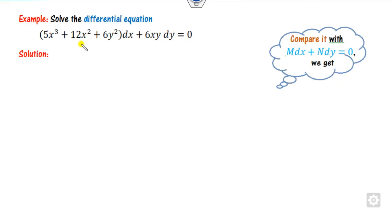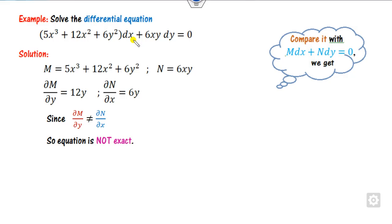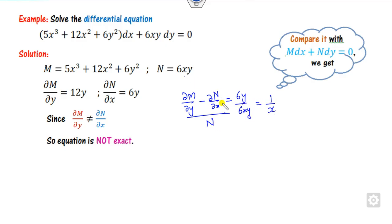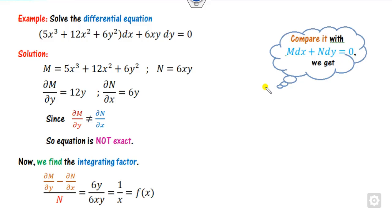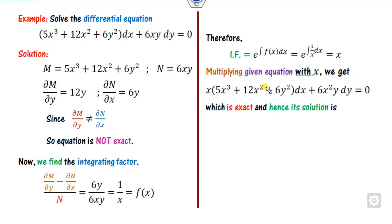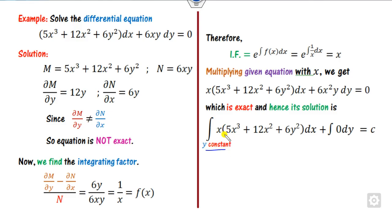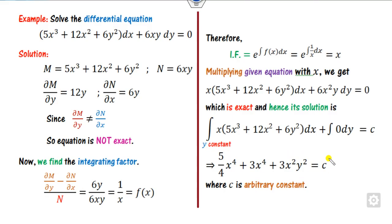For the last example, identify M and N — it is not exact. Taking the subtraction and dividing by N: if I take 6xy as N, it gives 1 over x, and since I need a function of x, the integrating factor is x. Multiply the given differential equation by x, and it is exact. Keeping y as a constant, 5x raised to power 4 integrates to give the result, and 12x cubed integrates accordingly. With 6y squared as constant, x squared over 2 is the right answer.